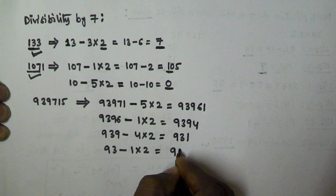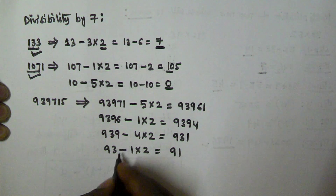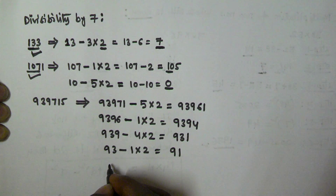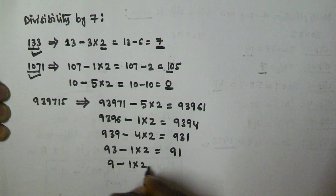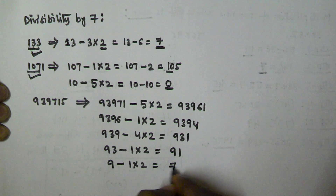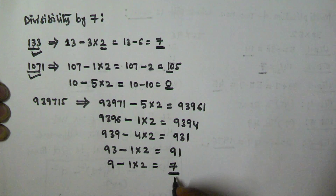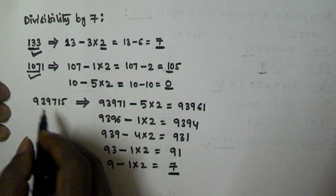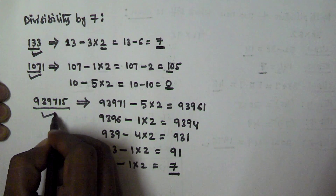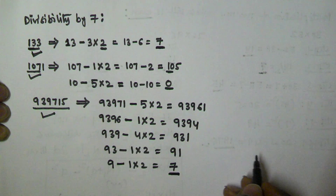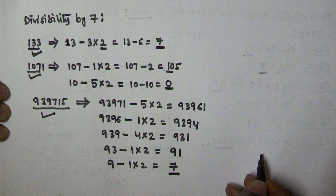We take 93 minus 1 multiplied by 2, which gives us 91. We repeat once more: 9 minus 1 multiplied by 2 gives us 7. Since 7 is divisible by 7, that means 939715 is divisible by 7. I hope you understand — thank you very much for watching.